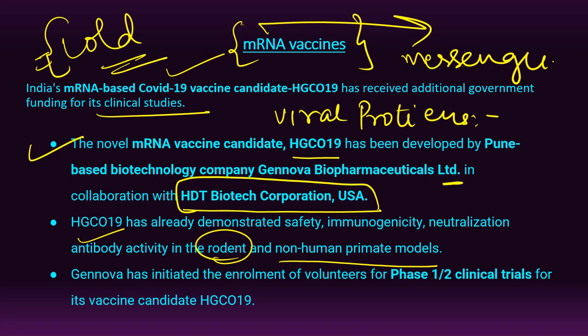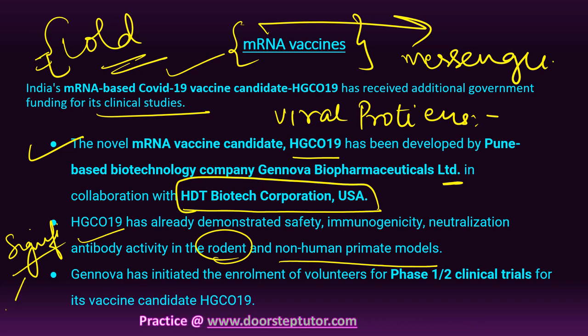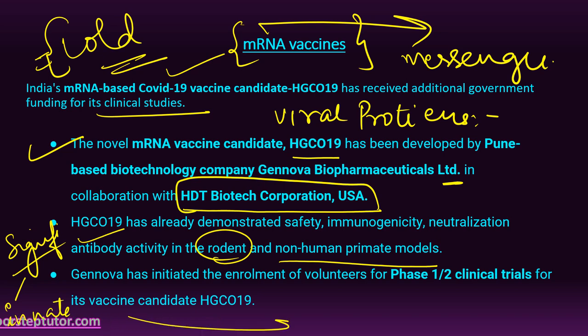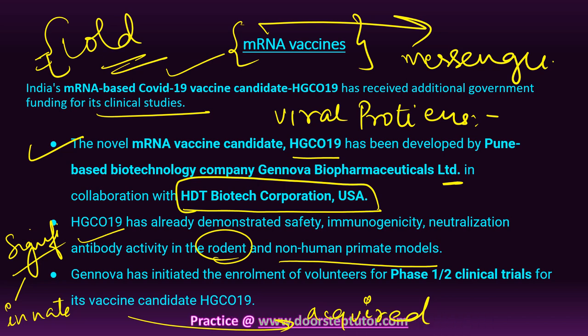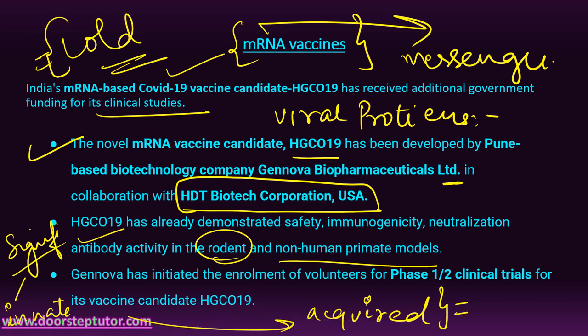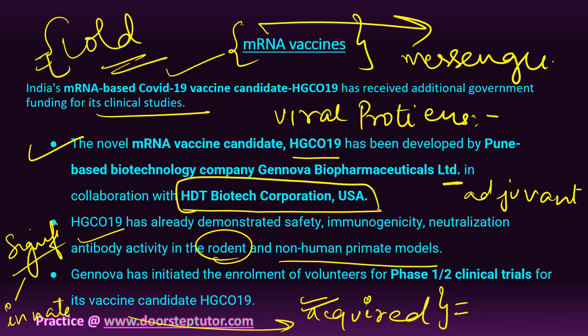Regarding the significance of mRNA vaccines: the immune system has two parts — the innate part (defenses we are born with) and the acquired part (developed as we come into contact with pathogens). Classical vaccine molecules usually only work with the acquired immune system, and the innate immune system is activated by another ingredient called an adjuvant. Interestingly, mRNA in vaccines could also trigger the innate immune system, providing an extra layer of defense without the need for an adjuvant.